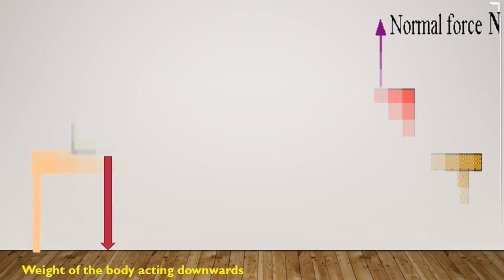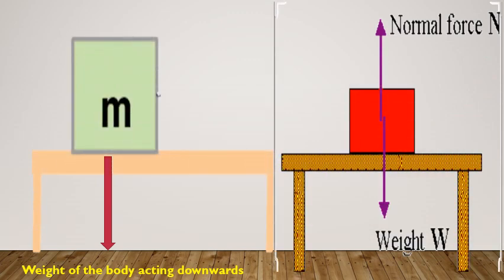When a body is placed on a surface, obviously it will exert a force on the surface which will be equal to its own weight. But since the force will be perpendicular, we will say that the body is exerting a thrust on the surface equal to its own weight.